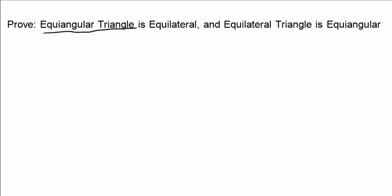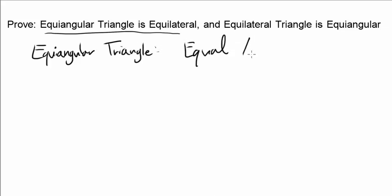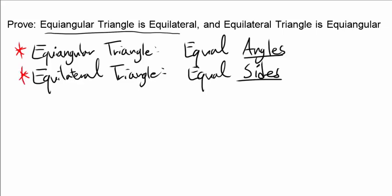In this video, we want to prove that an equi-angular triangle is equilateral and an equilateral triangle is equi-angular. An equi-angular triangle is a triangle with equal angles, and an equilateral triangle is a triangle with equal sides. We want to show that these two are basically the same thing — if something is equi-angular, it's equilateral, and vice versa.